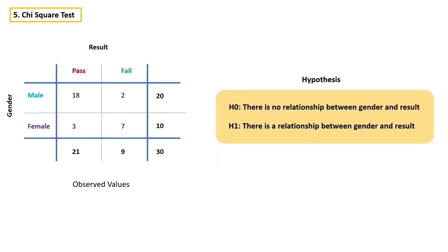Here, the null hypothesis will be: there is no relationship between gender and result. And the alternative hypothesis will be: there is a relationship between gender and result.